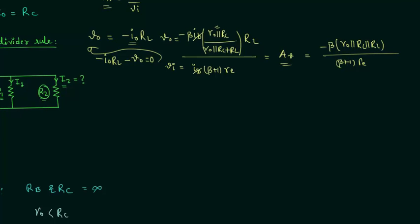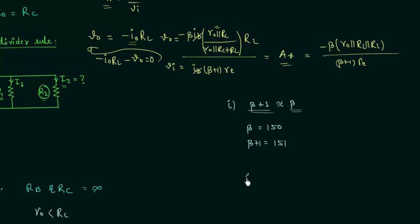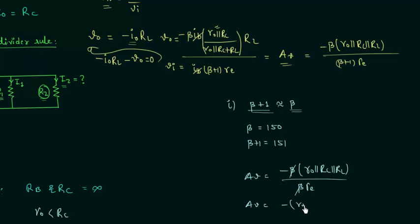Now we will perform a few simplifications. In the first simplification, we neglect the difference between beta and beta plus 1, since beta is a large quantity — for example if beta is 150, then beta plus 1 is 151, which are nearly equal. So beta plus 1 is approximated as beta, and the two beta terms cancel out. The voltage gain becomes minus R_O parallel R_C parallel R_L divided by R_E.